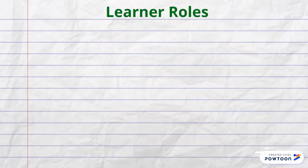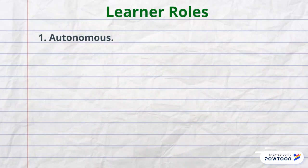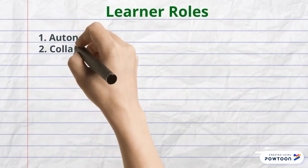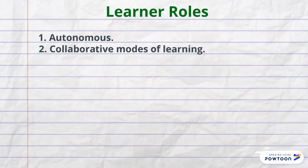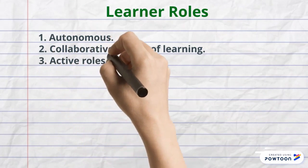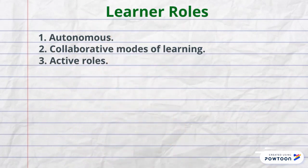Learner roles: one goal of content-based instruction is for learners to become autonomous so that they come to understand their own learning process and take charge of their own learning from the very start. Most CBI courses anticipate that students will support each other in collaborative modes of learning. CBI is in the learning-by-doing school of pedagogy, which assumes an active role by learners — for example, they are expected to be active interpreters, willing to tolerate uncertainty, and willing to explore alternative learning strategies.